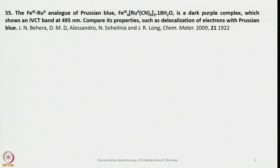Here is a question: the iron(III)-ruthenium(II) analog of Prussian blue. You are all familiar with Prussian blue — it has iron(III) and iron(II). Here we are talking about a hybrid of Fe³⁺ and Ru²⁺: Fe₄[Ru(CN)₆]₃·18H₂O. This is a dark purple complex, unlike the homologous iron-iron analog which is intense blue. It shows an IVCT (intervalence charge transfer, or metal-to-metal charge transfer) band at 495 nm. Compare its properties such as delocalization of electrons with Prussian blue.